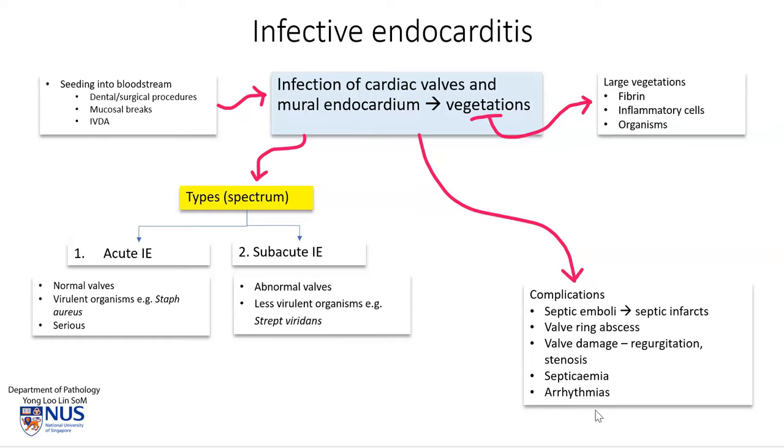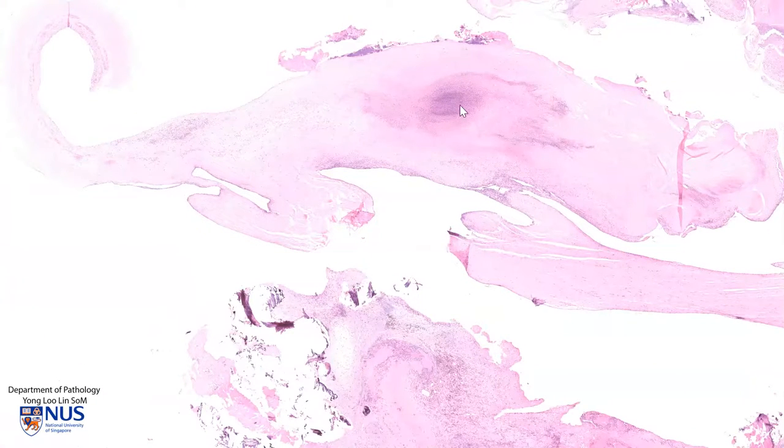If the conduction system is involved, there may also be arrhythmias. In summary, infective endocarditis is an infection of the heart valves and sometimes the mural endocardium, giving rise to large vegetations comprising fibrin, bacterial organisms, and inflammatory cells. Complications include infection of the valve substance itself, causing valvular dysfunction, as well as eventual fibrosis, scarring, and calcification, which can give rise to valvular stenosis or regurgitation.